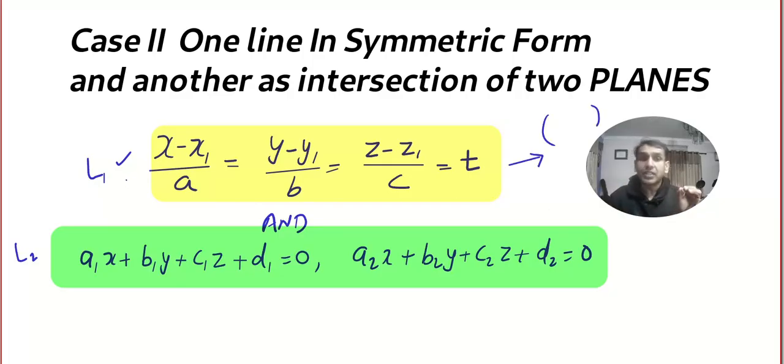What you do is you convert the line in symmetric form into parametric form, and then check whether the parametric form will balance this equation and this equation for the same value.